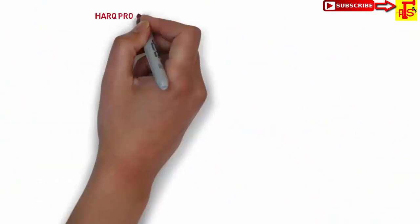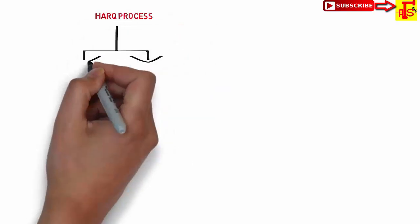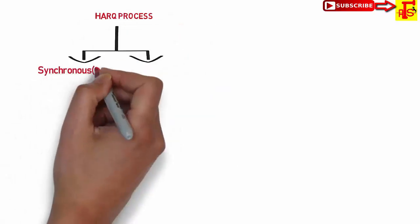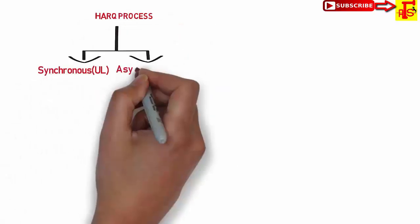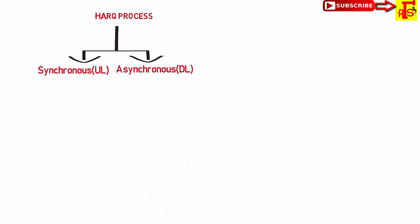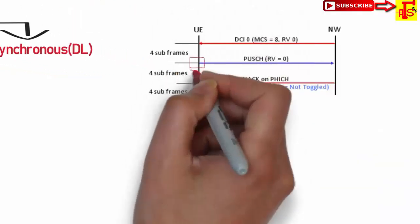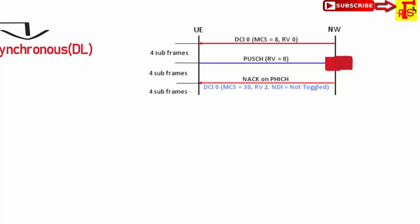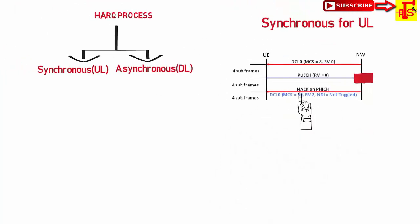What types of HARQ process will be used? Synchronous and Asynchronous. Synchronous is used for the Uplink HARQ and Asynchronous is used for the Downlink HARQ. For uplink, data is synchronous. You send data to eNodeB in the form of a transport block. If the transport block is correctly received, eNodeB sends an acknowledgement; if not, eNodeB will retransmit the NACK.